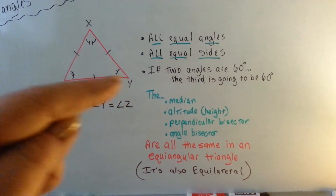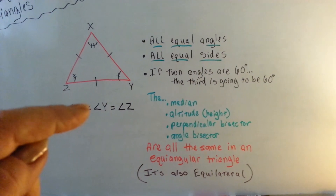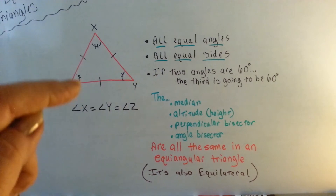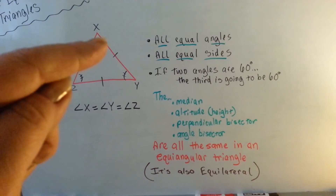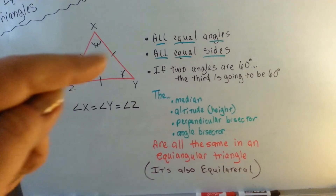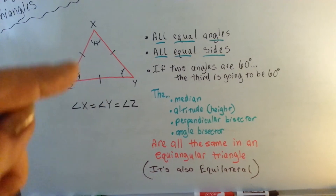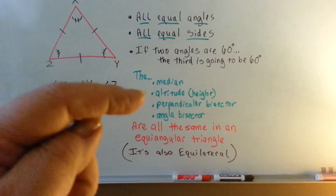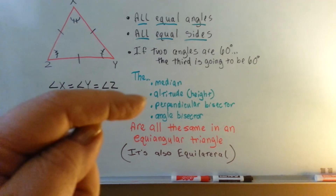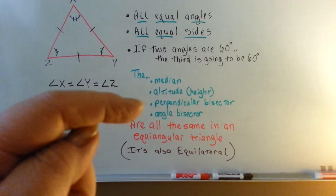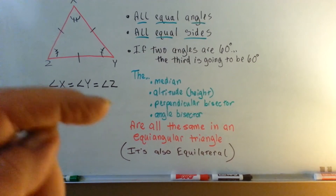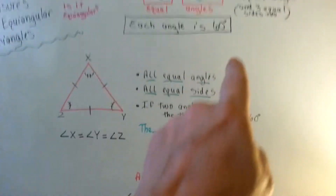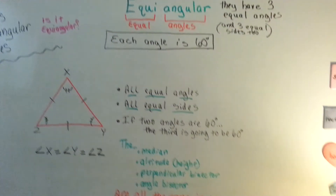We have triangle X, Y, Z here. Angle X is equal to angle Y is equal to angle Z. That's what those little hash marks in the angle curves means. And the little hash marks on the sides means the sides are equal. So the median, the altitude (which is the height), the perpendicular bisector, and the angle bisector are all the same in an equiangular triangle. It's also equilateral because the sides are equal, too.